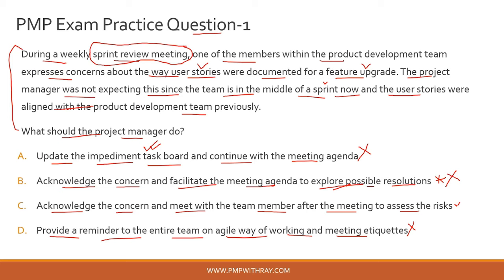The correct answer is Option C: acknowledge the concern and meet with the team member after the meeting to assess the risk. If you are preparing for your PMP exam, check out my PMP exam preparation courses on Udemy — they are highly rated and many PMP aspirants have passed their exam with the help of these courses. All links are in the description section of this video.